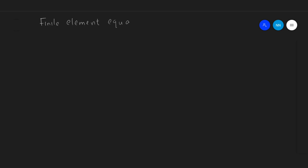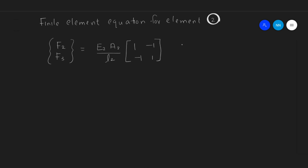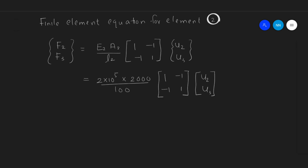Let's write down the finite element equation for element number 2, which consists of nodes 2 and 3. Force matrix [F2, F3] equals E2*A2 divided by L2, times [1, -1; -1, 1], times [U2, U3]. Substituting the values: Young's modulus 2 × 10⁵, area 2000, length 100, which yields 40 × 10⁵ times [1, -1; -1, 1] times [U2, U3].